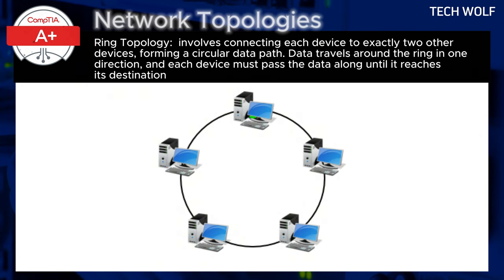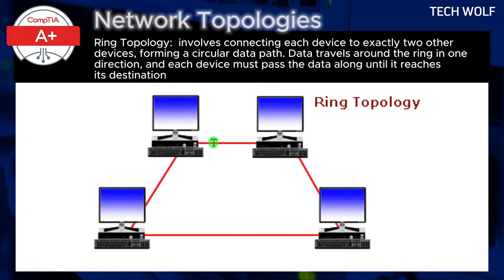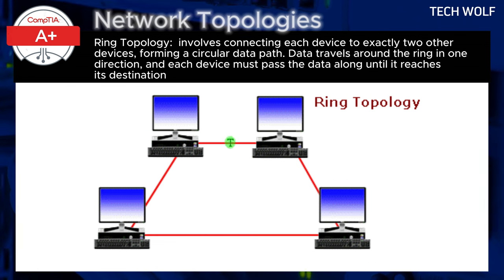Moving on, ring topology involves connecting each device to exactly two other devices, forming a circular data path. Data travels around the ring in one direction, and each device must pass the data along until it reaches its destination. This topology ensures equal access to the network for all devices, making it less prone to data collisions.